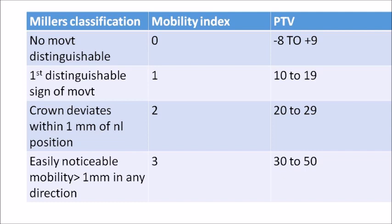Miller's mobility index 1 — first distinguishable sign of movement — corresponds to a Periotest value of 10 to 19. Index 2 — crown deviates within 1 mm of the normal position — corresponds to values of 20 to 29. Index 3 — easily noticeable mobility of more than 1 mm in any direction — corresponds to a score of 30 to 50. So Periotest values range from −8 to +50.